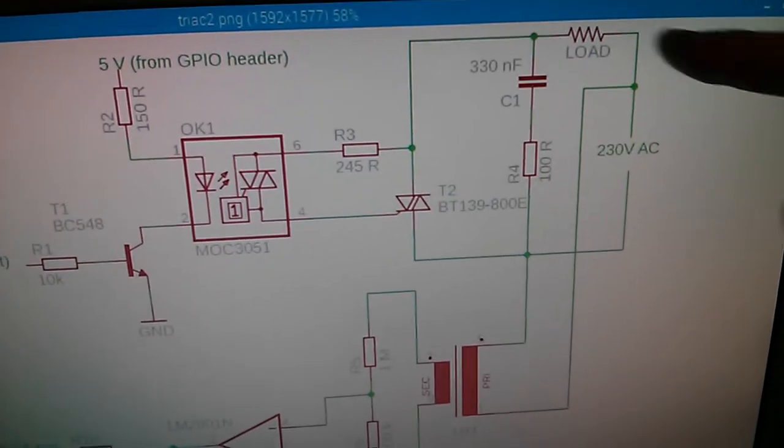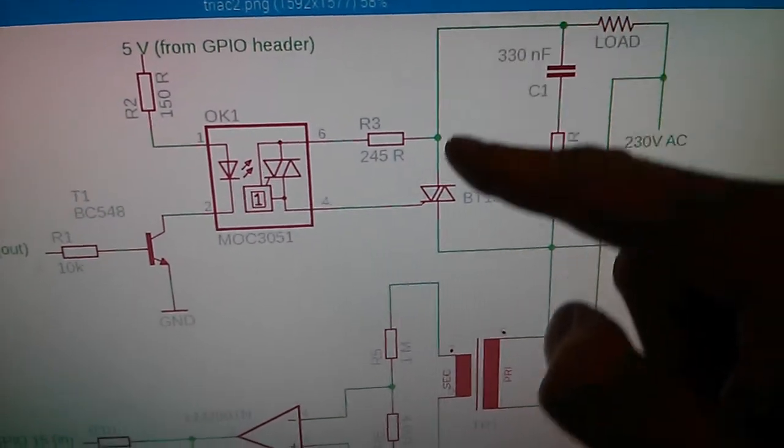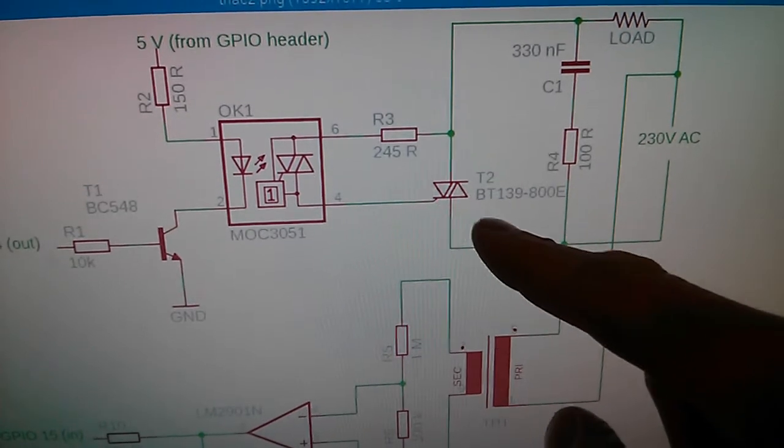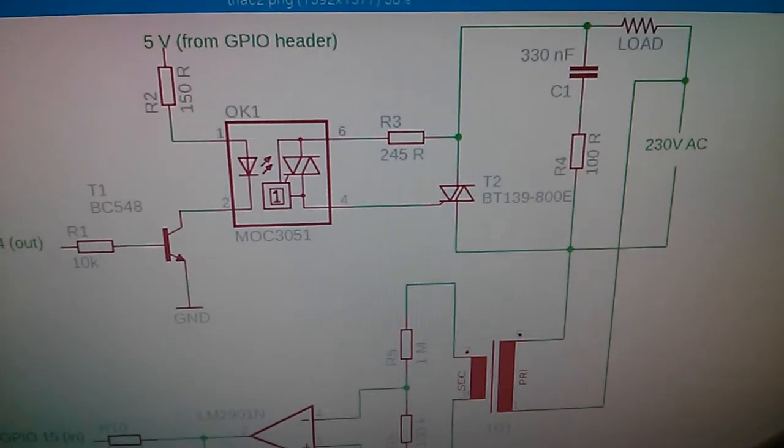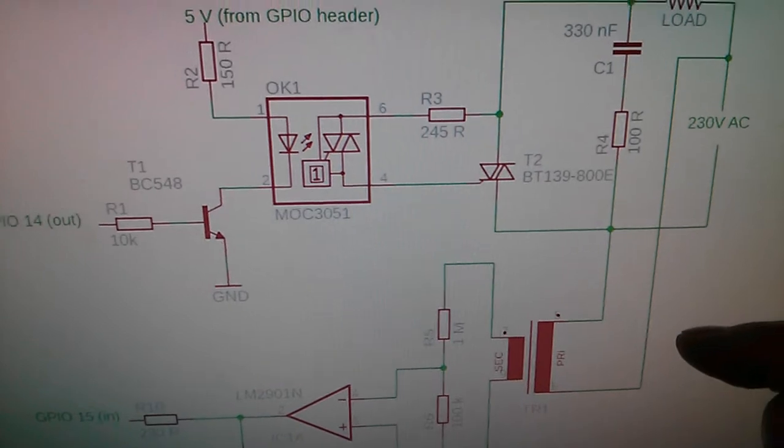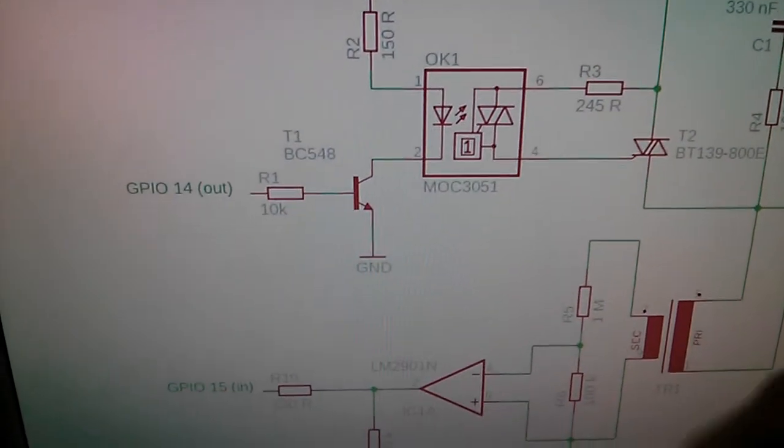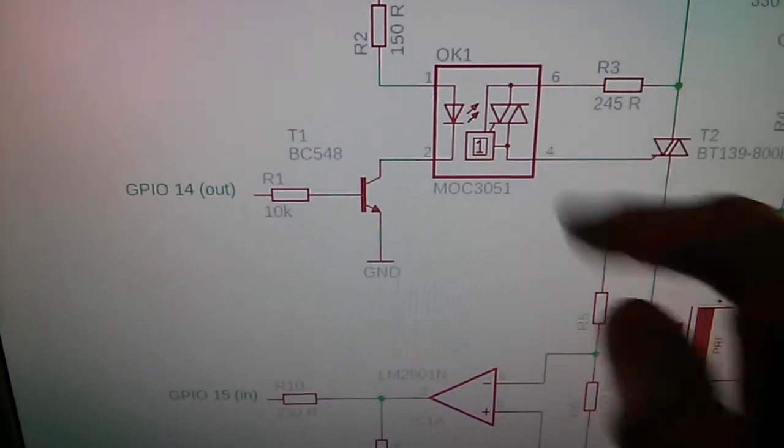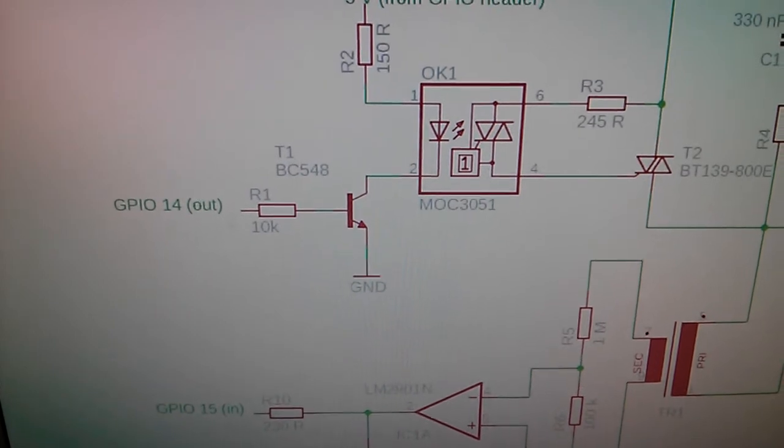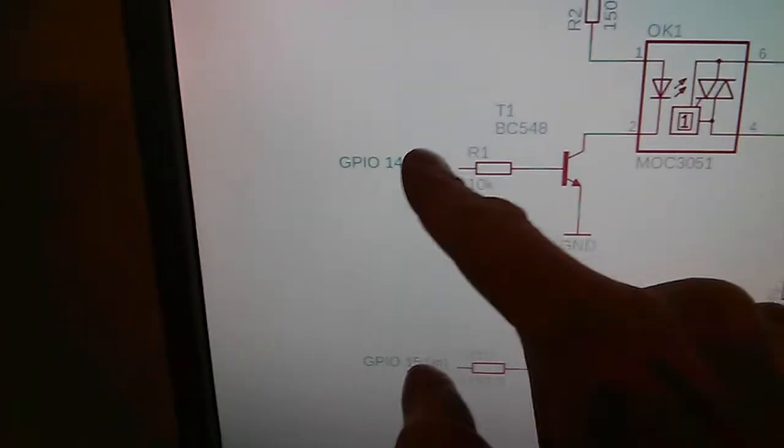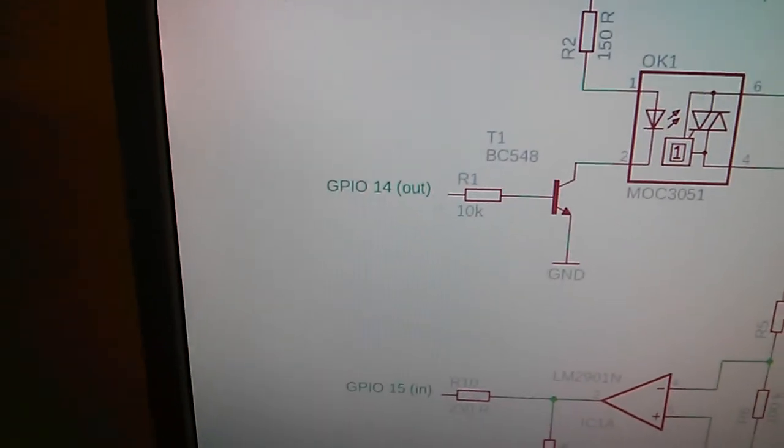Now the load itself, which we have up here, is controlled through a BT-139 triac. And the ignition, the gating signal for this triac is also generated by the Raspberry Pi through this octocoupler triac to provide galvanic isolation. And here we go to an output GPIO pin.